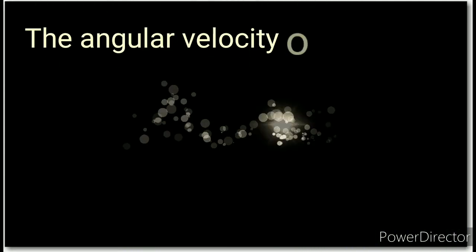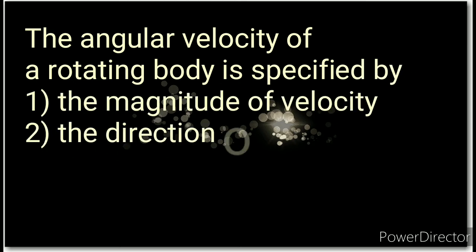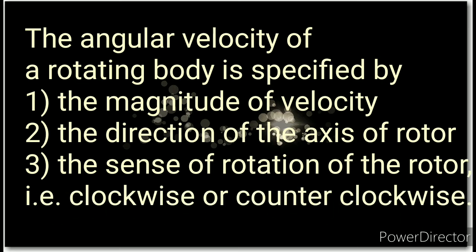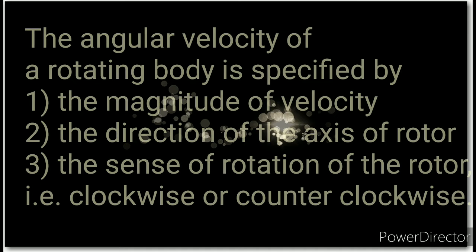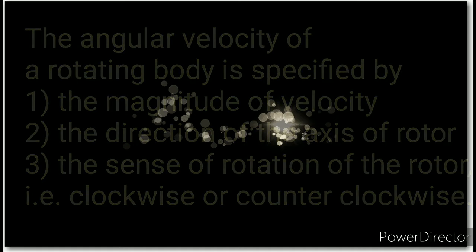The next topic is angular velocity. The angular velocity of a rotating body is specified by: first, the magnitude of velocity; second, the direction of the axis of the rotor; and third, the sense of rotation of the rotor — that is, clockwise or counter-clockwise.